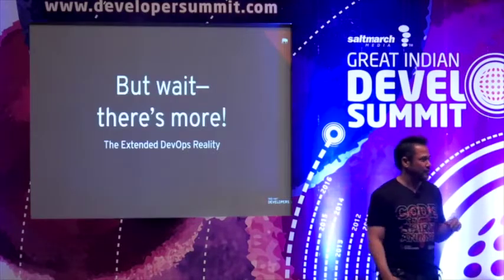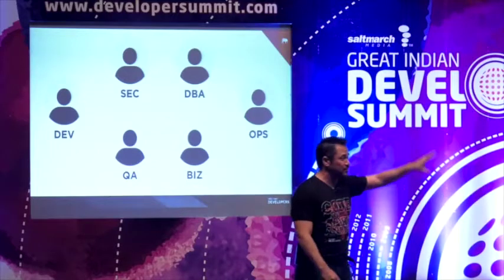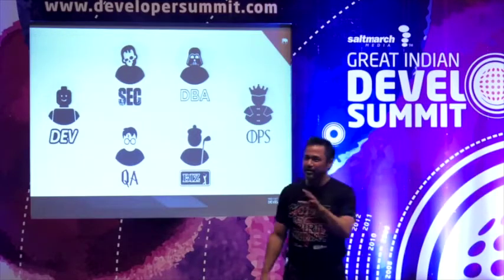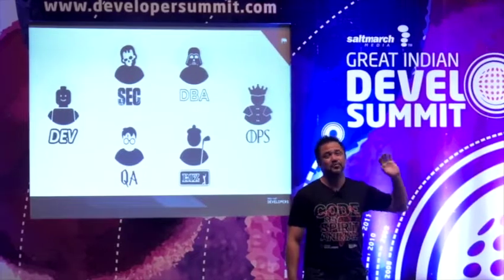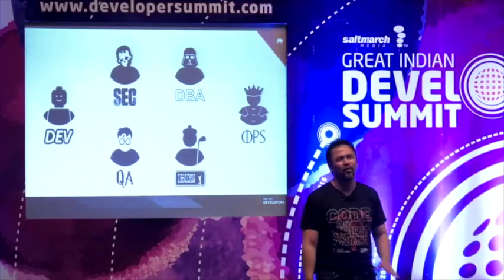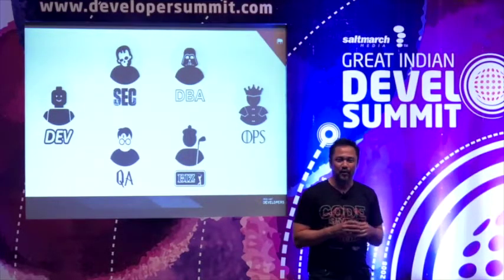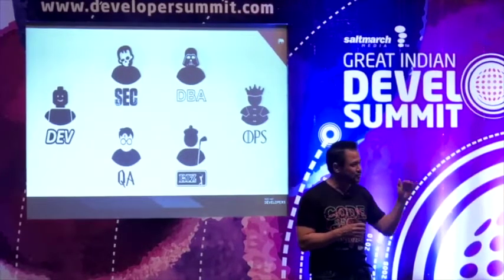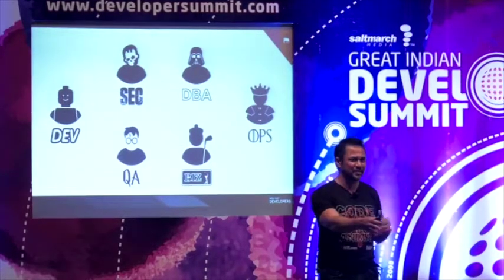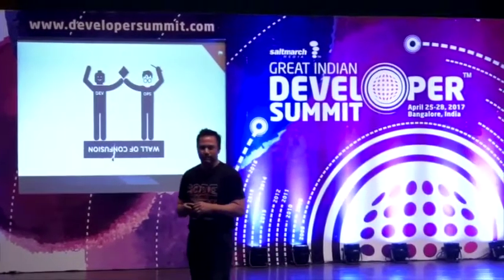There's more than just dev and ops in this picture — there's the security team, the DBAs, the business people, the QA people. We have to build common ground with these people. I get this question a lot: 'The DBAs will never work with us, the operations team is so backwards, the QA people are so waterfall-oriented.' But you can have common ground with all these people. Take them to lunch, figure out their common interests — they will actually work with you if you will work with them.